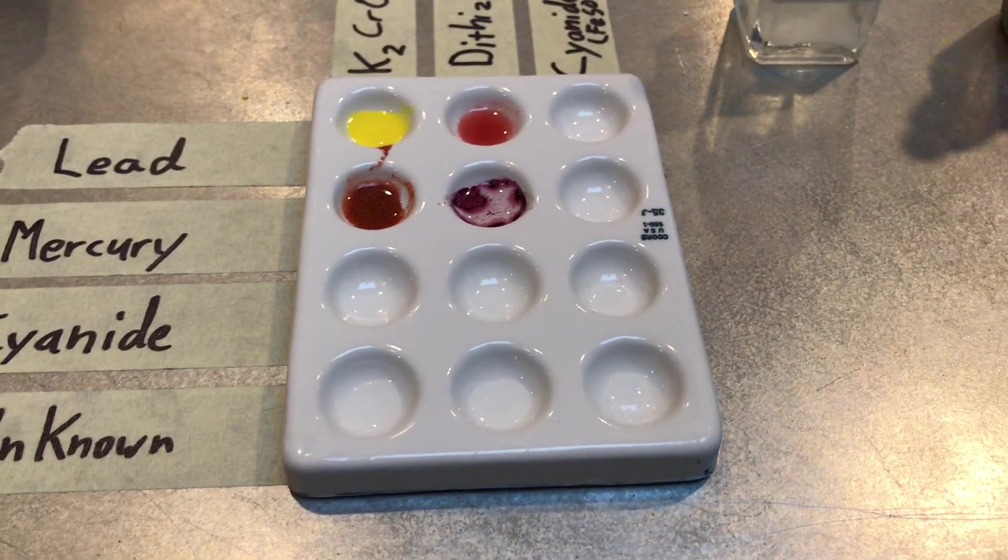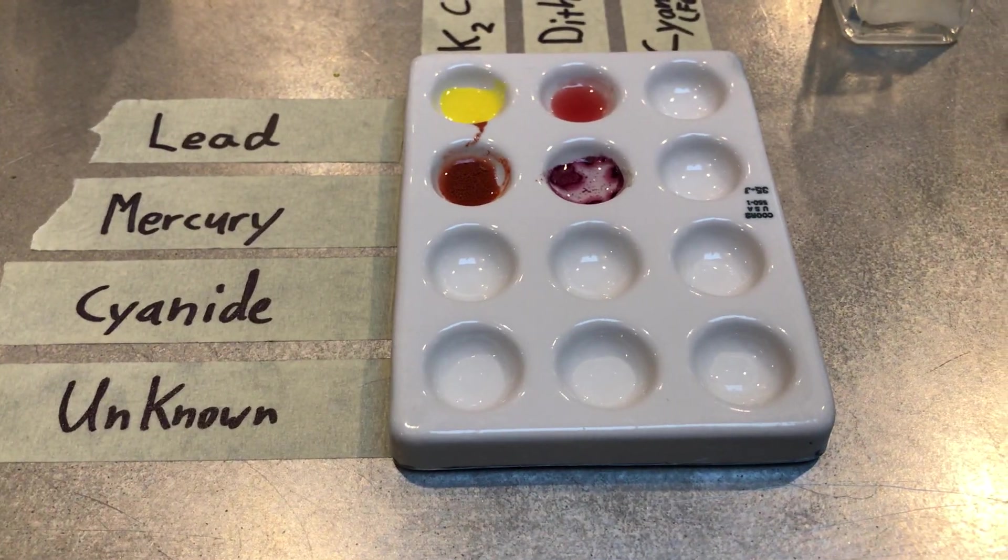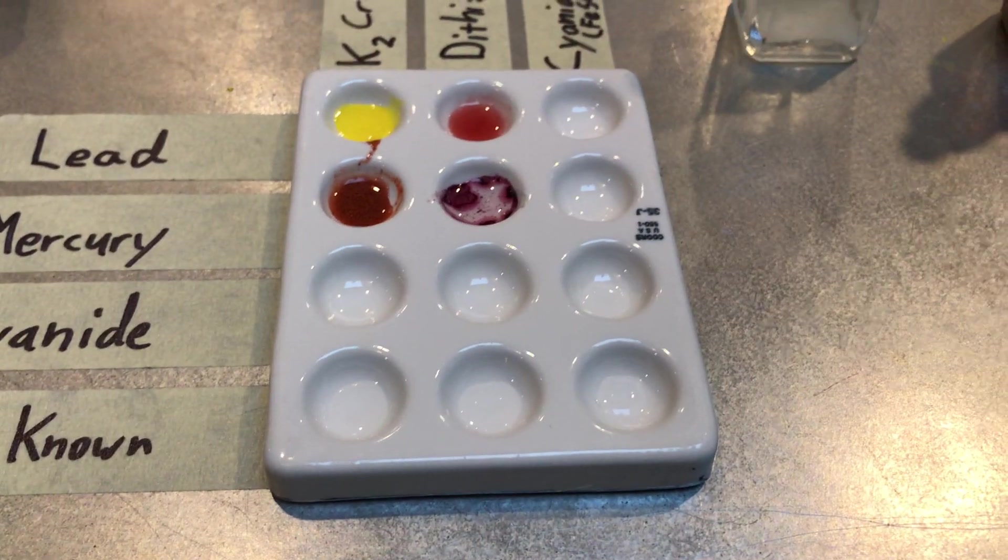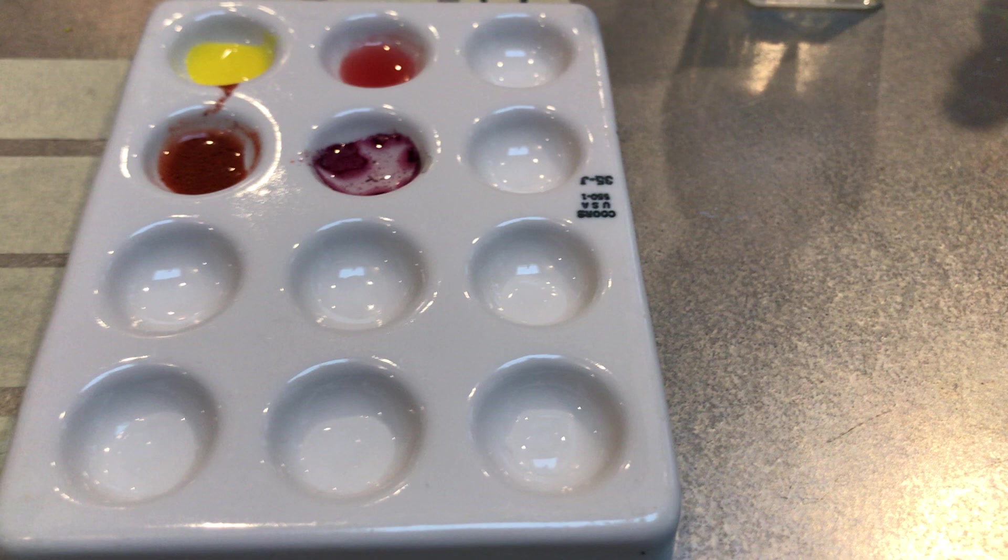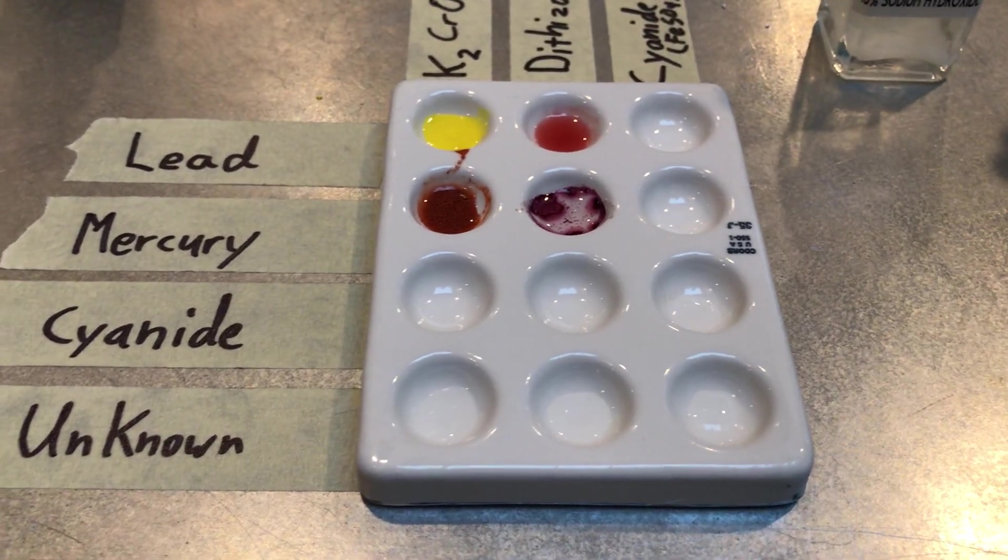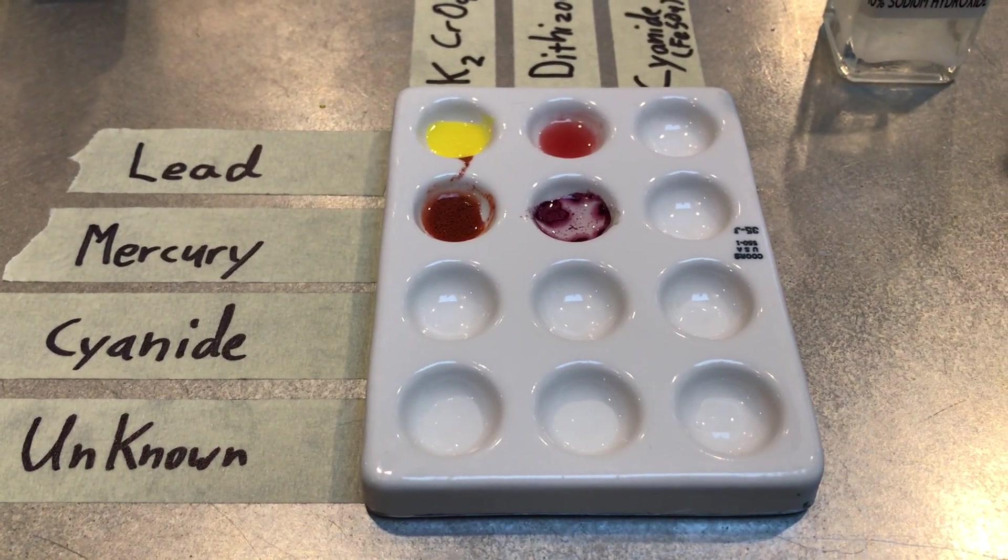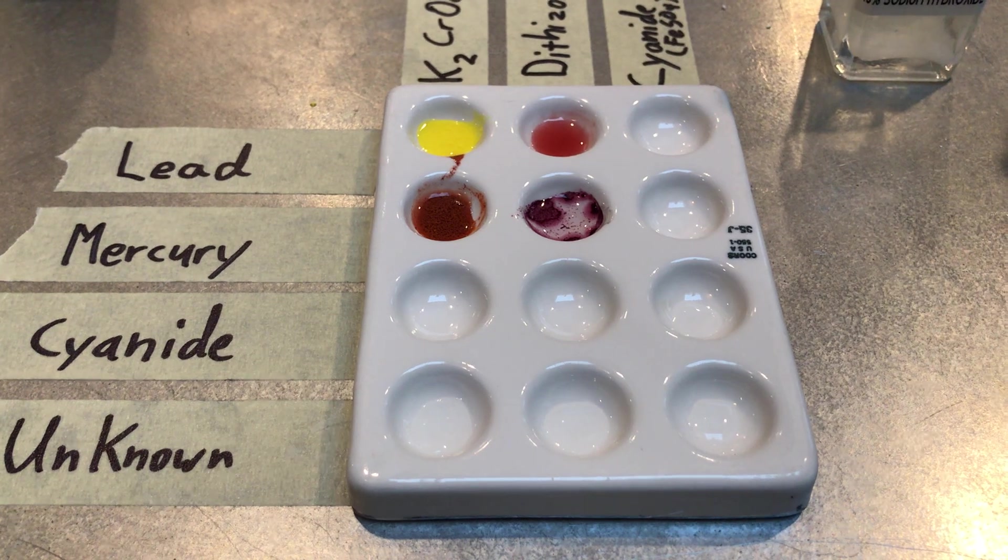Alright gang, it's time to do the cyanide test on our known cyanide solution. This is going to be our control test to let us know what cyanide actually looks like in its reaction. This is a very specific test with a very specific outcome. If we don't see this outcome on our unknown, we know there is no cyanide.